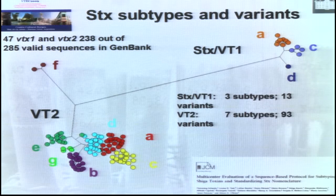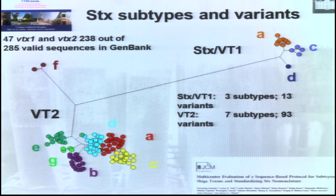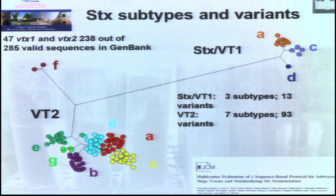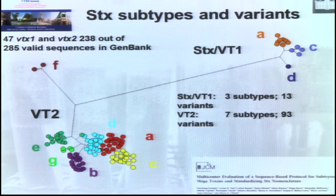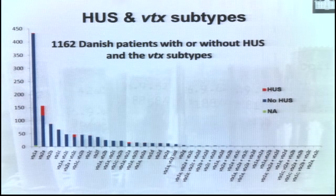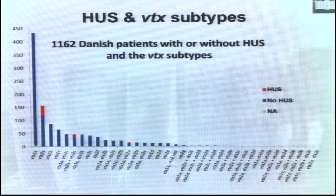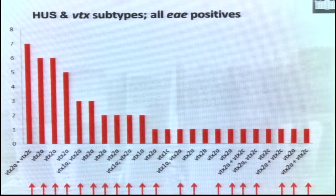There are many different types and variants of these toxins. This family tree of toxins was agreed upon during the 8th VTEC Symposium in Buenos Aires, where the type ones are divided into three subtypes A, C, and D, and the type twos are divided into subtypes A through G. We've studied the prevalence of these types in our patients reporting either HUS or not HUS. As you can see on this slide, VTX1 is by far the most dominant, followed by VTX2A. In red, you see cases of HUS, and VTX2A is implicated in almost all of these cases.